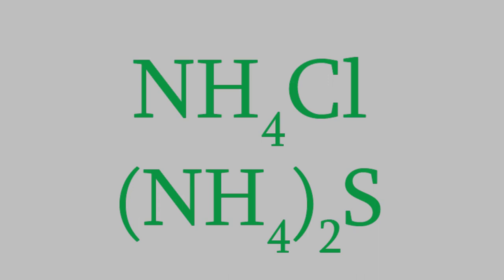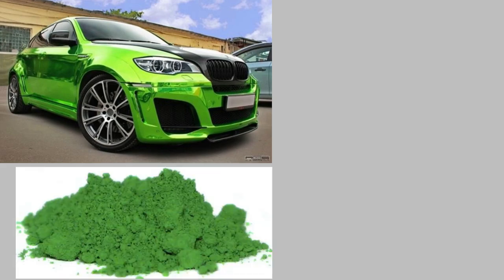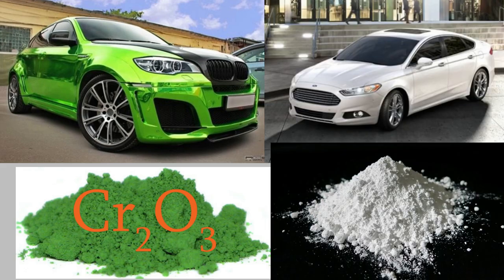It turns out that thousands of useful molecules are made by combining ions this way. For example, some of the bright pigments we use in paints are made of ions from just two elements. The green color of this car comes from a molecule made of chromium ions and oxygen ions. And this white pigment comes from titanium ions and oxygen ions. So now that we know how to write formulas for these compounds, let's talk about their names.